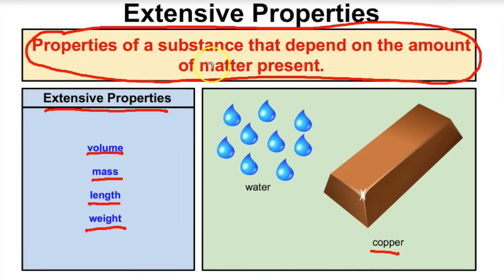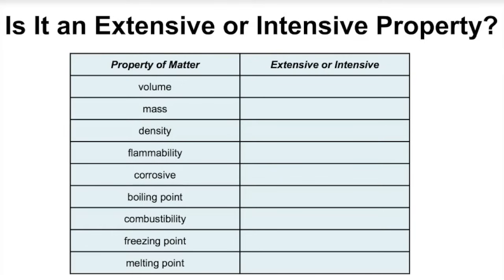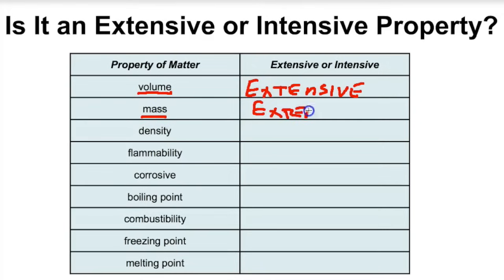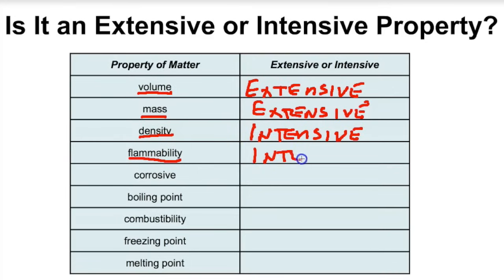Let's work through a few examples to determine whether properties are intensive or extensive. Volume depends on how much you have, so it's extensive. Mass also depends on how much you have, so it's extensive. Density of water is always 1 gram per milliliter no matter how much you have, so that is intensive. Flammability — gasoline is flammable regardless of how much you have, so that's intensive. Corrosiveness doesn't matter how much you have either, so that's also an intensive property.